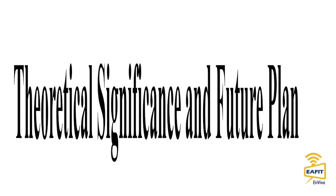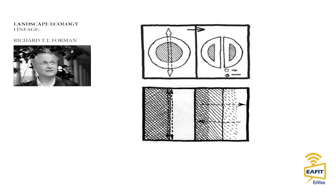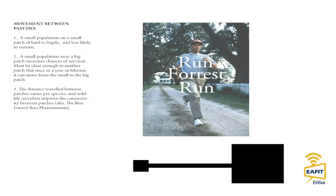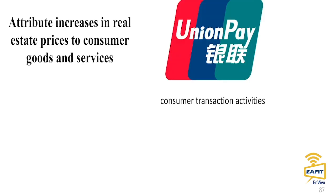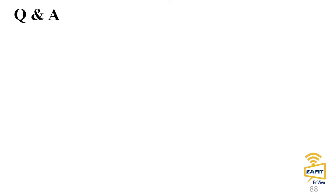For theoretical significance and future plans, we're thinking about urban ecology — Professor Richard Foreman's concept of movement between places — and how the spatial distribution of parks as a network affects their usage. We collaborate with DoCoMo, the cell phone carrier in Japan, and are looking to obtain China data. We're also exploring transaction data to understand how economic activity is embedded in visits to urban facilities like shopping malls or train stations.